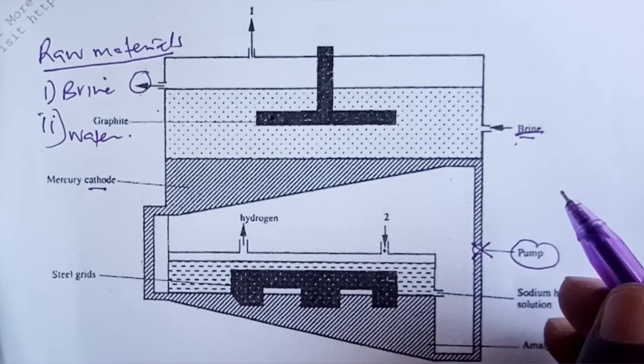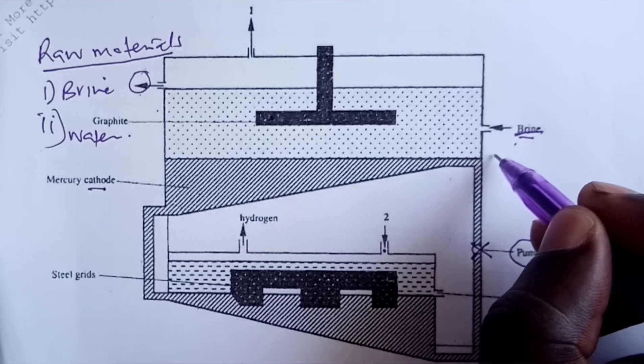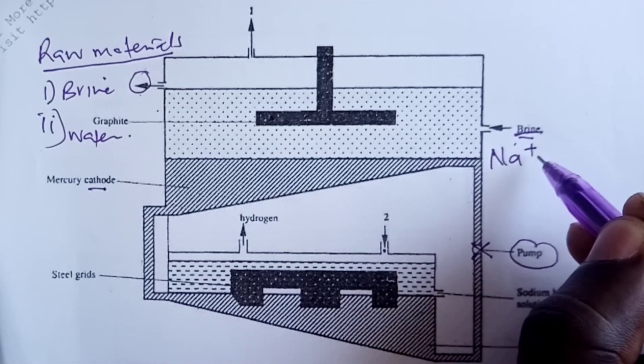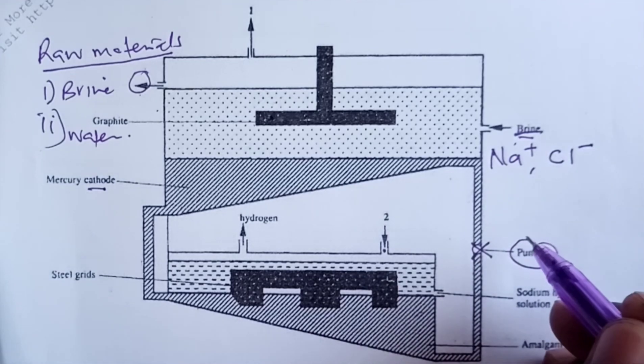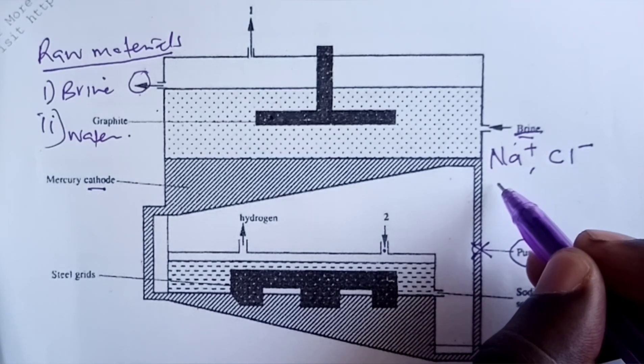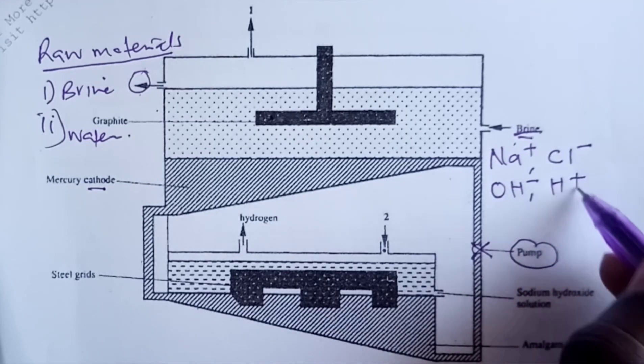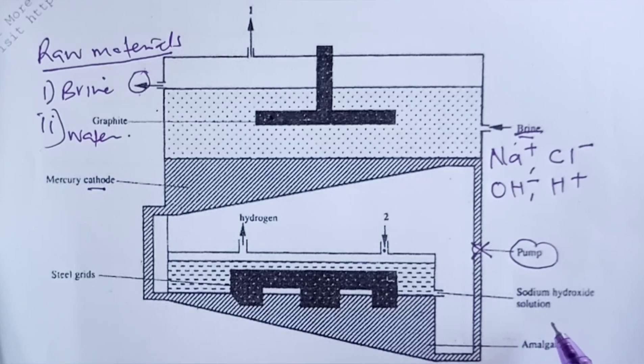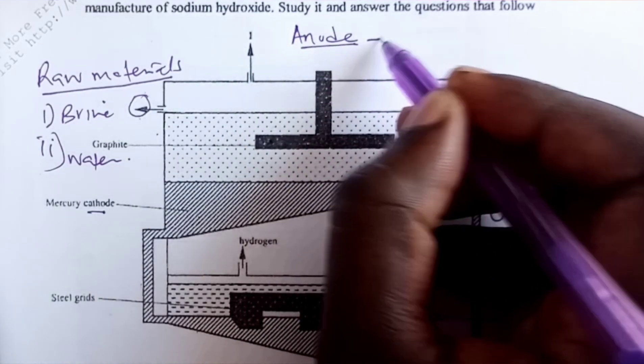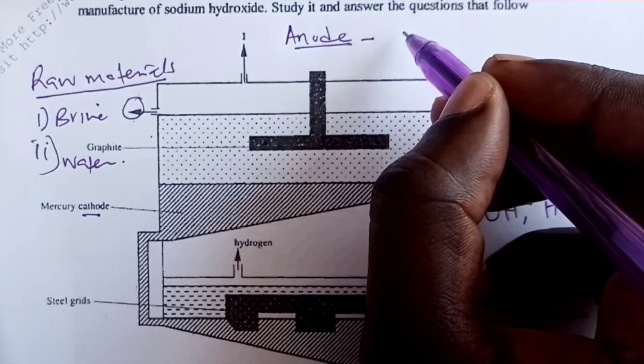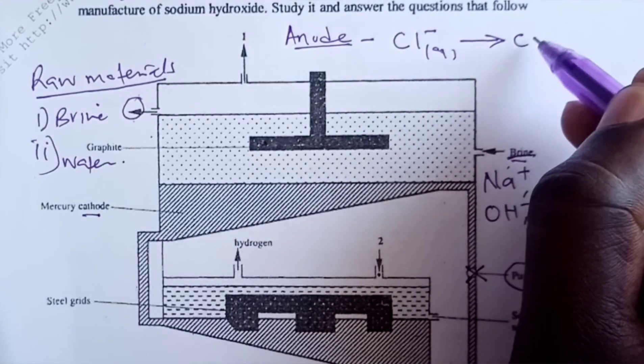Our electrolyte is brine, and brine contains four ions. We have sodium ions which are highly concentrated, chloride ions also in very high concentrations, and then we have hydroxyl ions in very low concentrations and also hydrogen ions again in very low concentrations. At anode, because chloride ions are highly concentrated, we shall discharge chloride ions at anode.